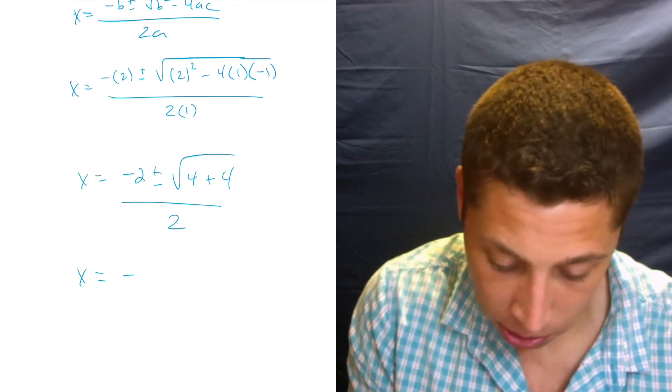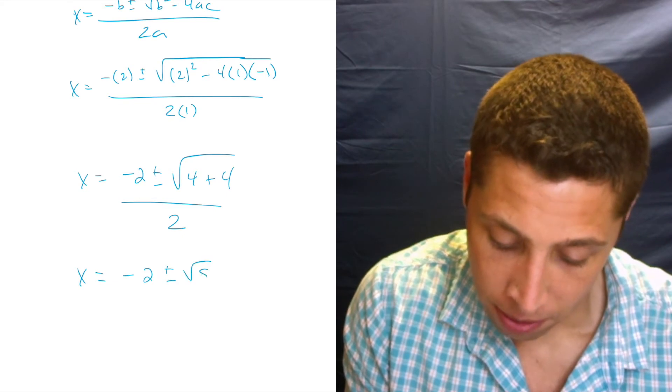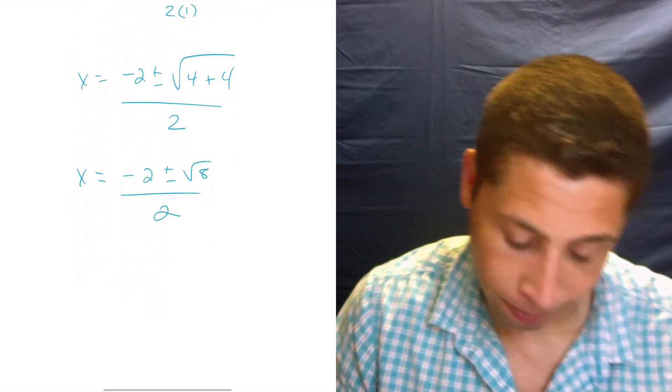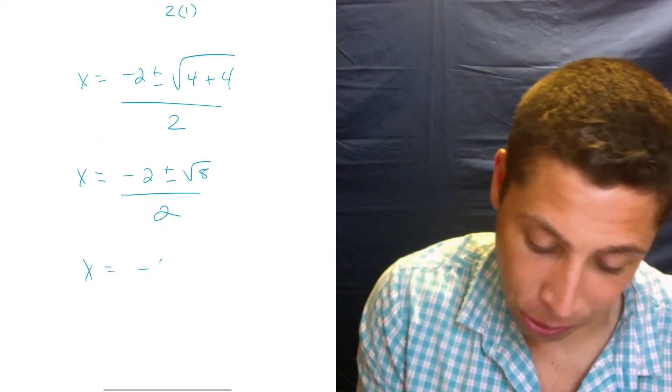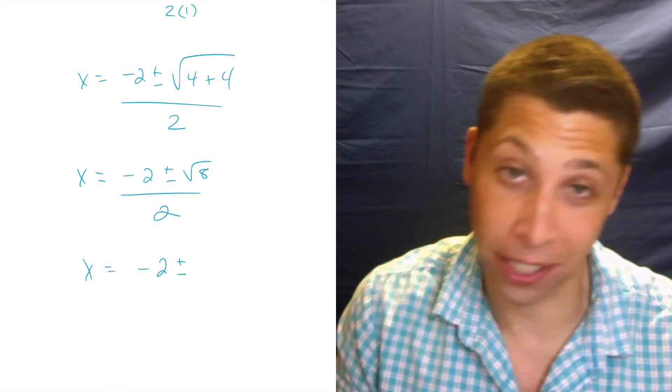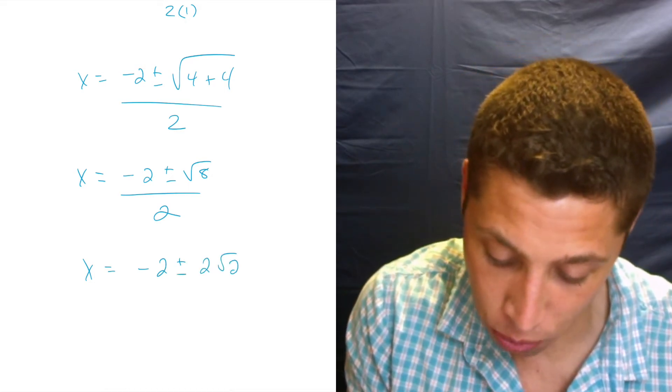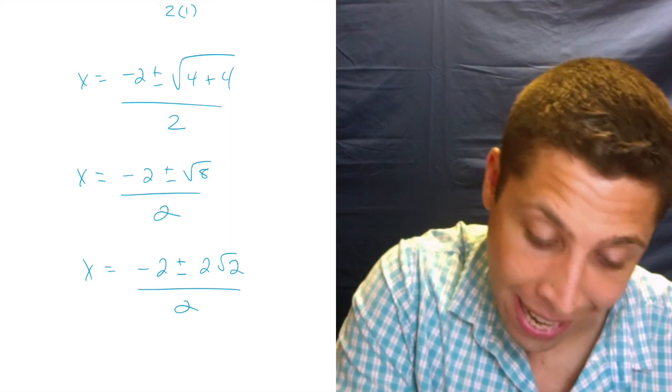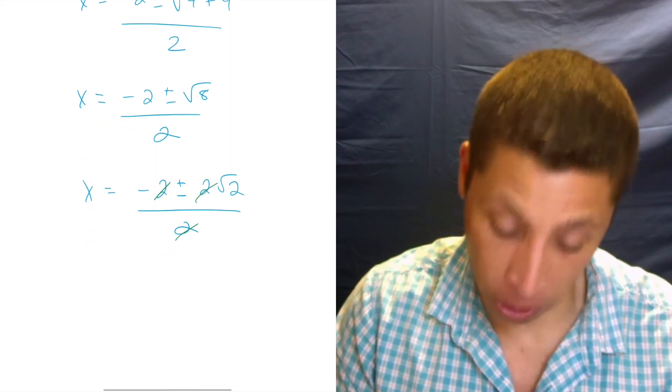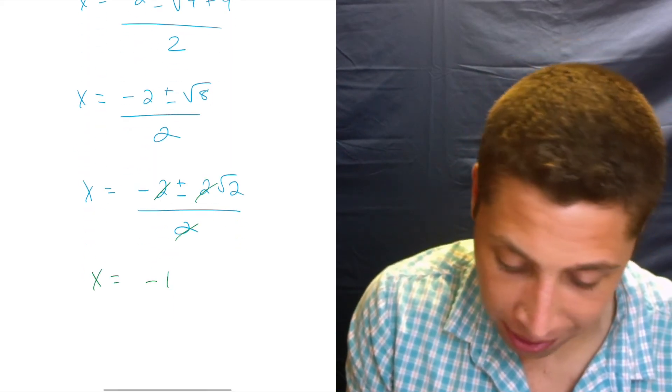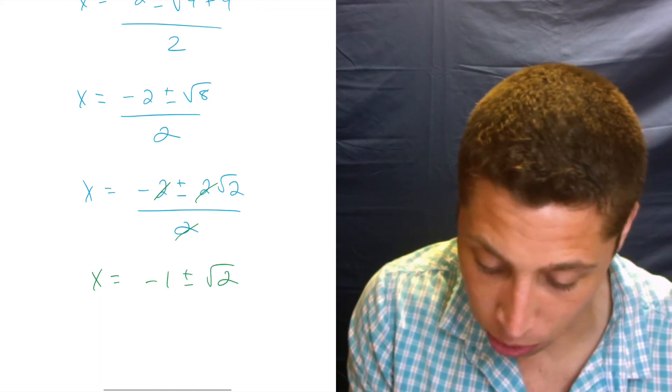So that's X is equal to negative 2 plus or minus the square root of 4 plus 4 over 2. Can't reduce that. Most people are going to reduce that. Can't do it. We got to do this first. And X is equal to negative 2 plus or minus, we got to convert radical 8. That's going to be 2 radical 2 over 2. Now we can reduce a 2 into all the parts. That leaves us with X is equal to negative 1 plus or minus the square root of 2.